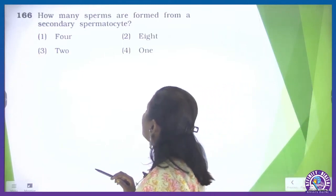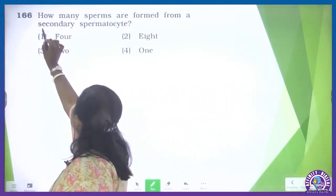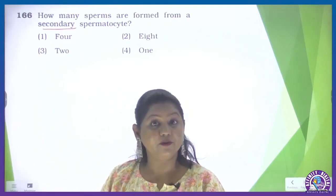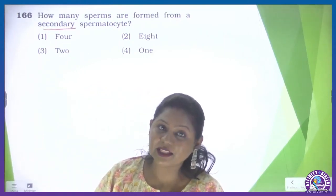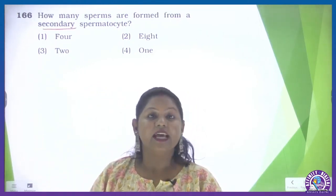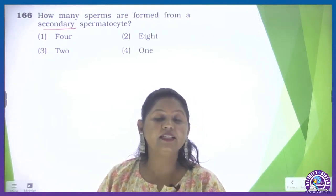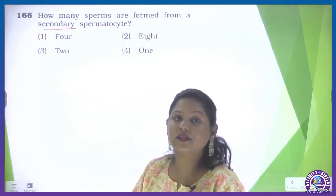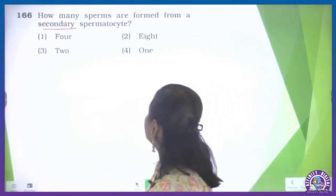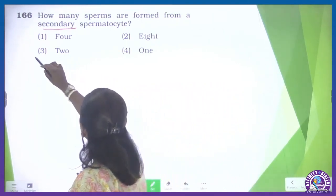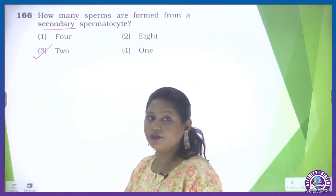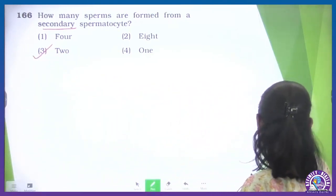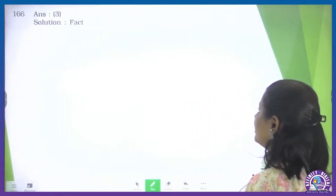Question: how many sperms are formed by a secondary spermatocyte? If primary was given, we would say 4. But here it is secondary spermatocyte. One secondary spermatocyte, by completing its second meiotic division, produces two spermatids. So the option will be 3 — having the answer 2. Question number 166, answer is 3.